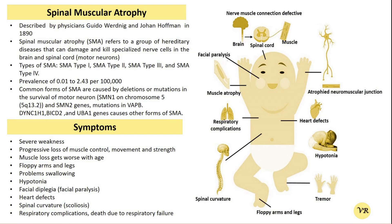SMA affects approximately 1 in 10,000 live births. The exact prevalence can vary slightly depending on the population and region. It is estimated that about 1 in 50 people are carriers of a mutation in the SMN1 gene. Carriers do not show symptoms of SMA. SMA is being identified more frequently and at an earlier stage, allowing for earlier intervention which can significantly improve outcomes.